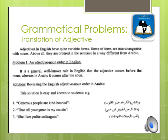In Arabic, adjectives follow the noun. There are problems listed under the translation of adjectives. Problem one, according to Ghazala: adjective-noun order in English. The general rule is that adjectives occur before the noun in English, whereas in Arabic they come after the noun. For example, in Arabic we say 'al-talib al-dhaki,' but in English we say 'smart student.' Solution: reverse the English adjective-noun order in Arabic. Example: 'generous people are kind-hearted.'